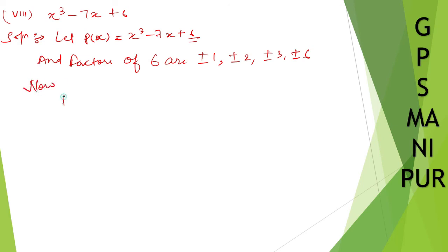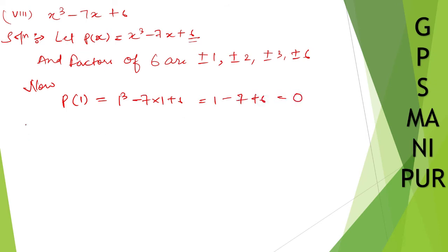Now, p of 1. Let us start from 1. p of 1 is equal to 1 cubed minus 7 into 1 plus 6. So, 1 minus 7 plus 6. 6 plus 1 is 7, and 7 minus 7 is 0. Therefore, x minus 1 is a factor of p of x.